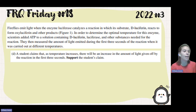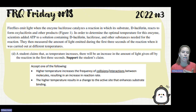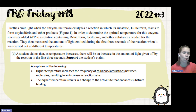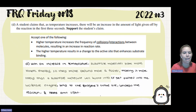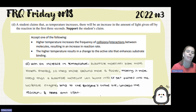It has to do with the kinetic energy of the molecules. As kinetic energy increases, there's going to be an increase in the frequency of collisions — more interaction between these molecules — and that increases the reaction rate. You could also say the higher temperature results in a change in the active site that enhances substrate binding. With an increase in temperature, substrate molecules have more kinetic energy, so they move around faster, making it more likely that the substrate will bind to the enzyme's active site, undergo reaction, and emit light.